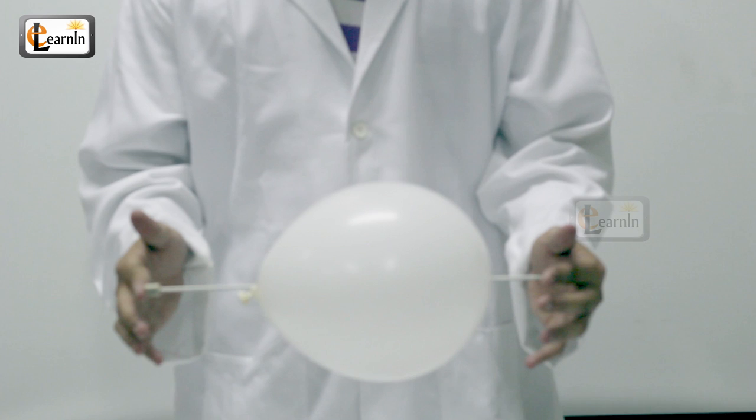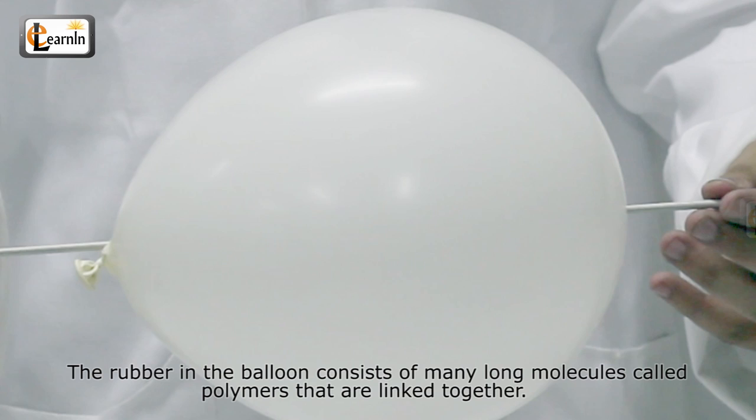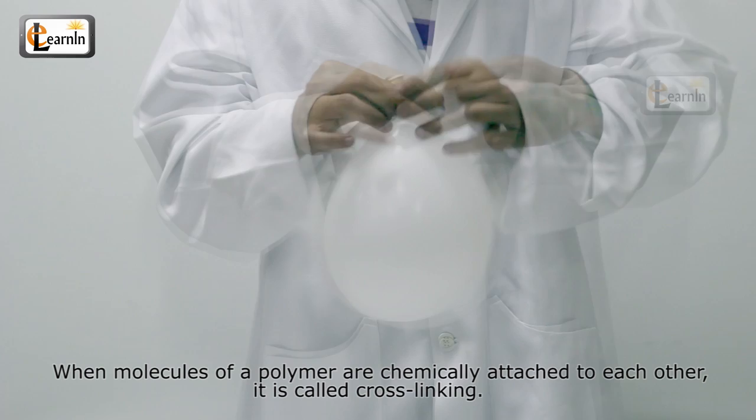The rubber in the balloon consists of many long molecules called polymers that are linked together. When molecules of a polymer are chemically attached to each other, it's called cross-linking.